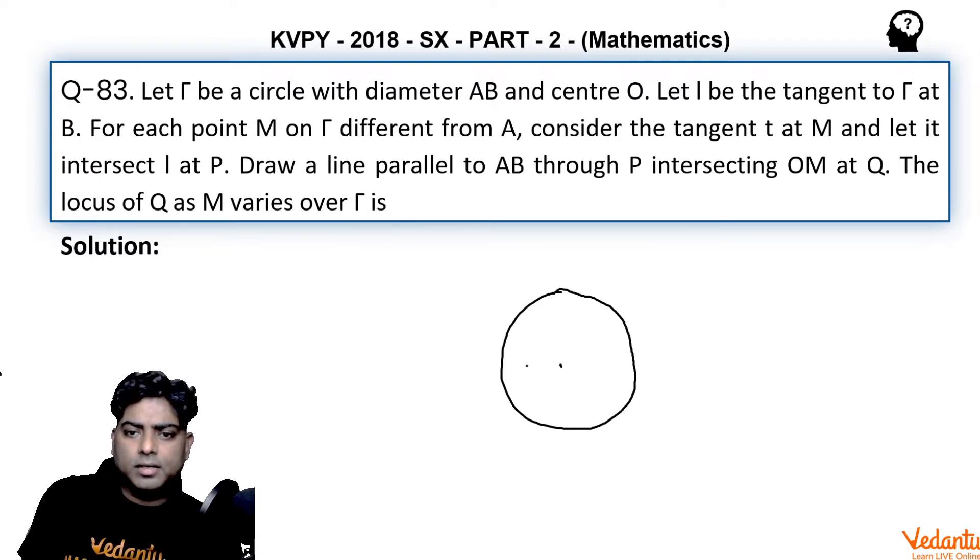Center is O, diameter is AB. This is center, this is A, this is B. I is the tangent to Γ at B, so I am going to draw a tangent at point B.